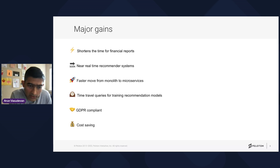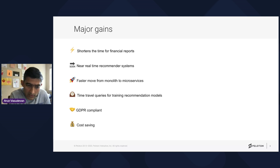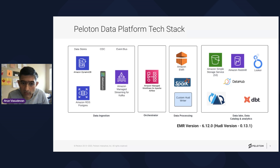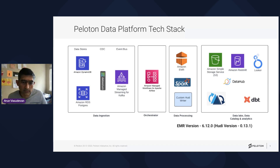Hoodie also helped us be GDPR compliant — all upstream deletes are propagated downstream to the data lake without any additional manual work, and without additional cost for reprocessing data. The last benefit is cost saving: the read replica is no longer needed, so we reduced considerable cost. At a high level, our tech stack leverages a lot of AWS services — data stores are PostgreSQL on RDS and DynamoDB, and change capture uses Debezium.